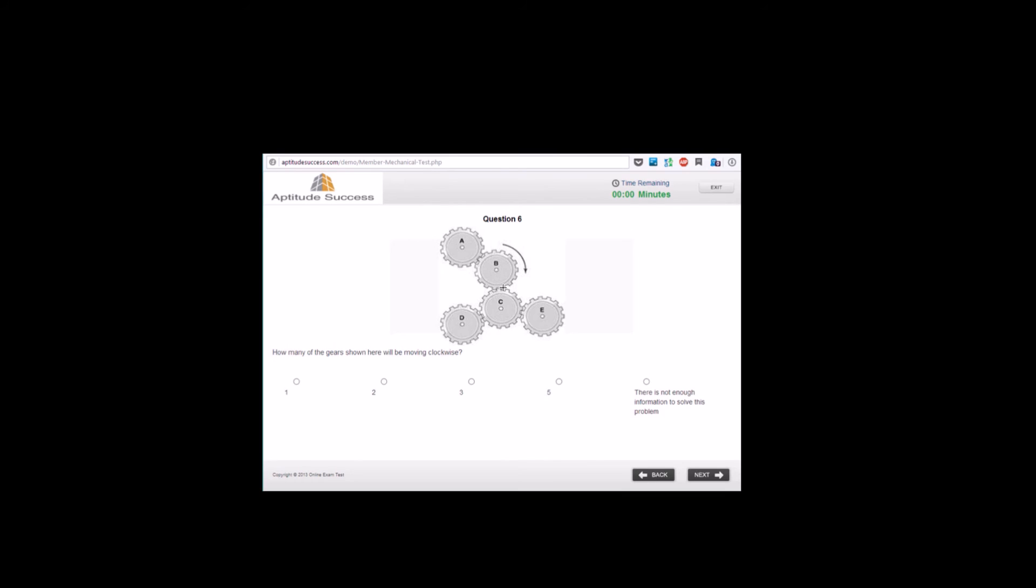That tooth there is pushing C anti-clockwise, which is pushing D clockwise, so that is two. And if C is going anti-clockwise, that will be pushing E in a clockwise direction. So that would give us three. The correct answer to this question would be three.